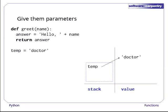Let's have a closer look at what happens when we call it. First, we assign the string doctor to the variable temp. When we call greet with temp as a parameter, Python creates a variable called name and copies the reference in temp into that variable. Temp and name are now aliases for the same string.